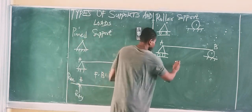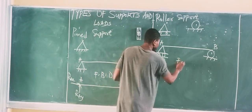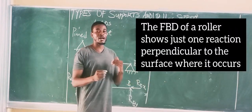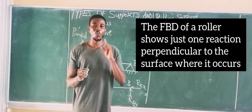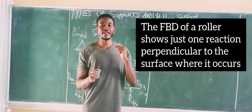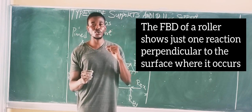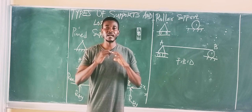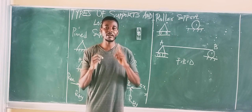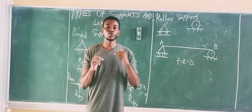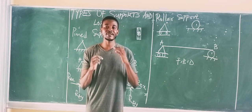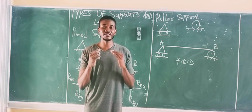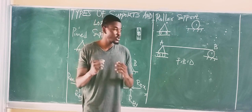To draw the free-body diagram of a Roller Support, every roller has just one reaction, but that reaction is always normal to the surface. The free-body diagram of a roller shows only one reaction, and that reaction is normal — meaning it is always at 90 degrees to the surface.